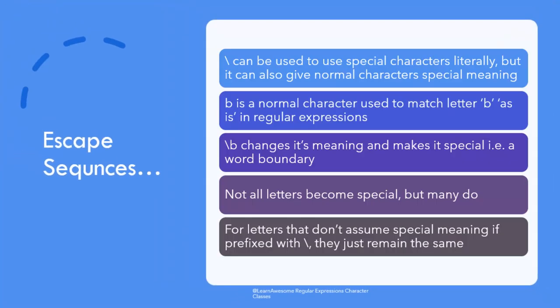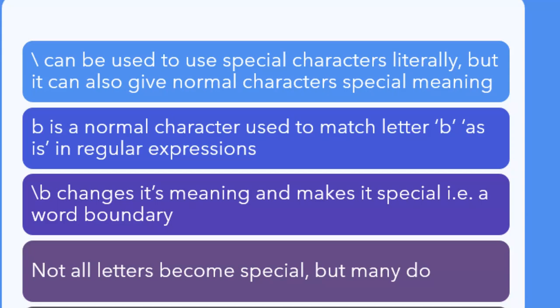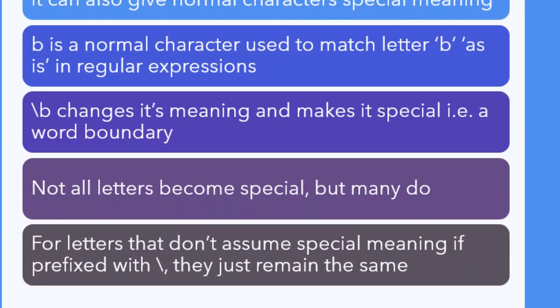There is a twist in the backslash story: backslash can not only strip a special character of its power, it can also give special powers to certain ordinary characters. For example, prefixed with letter b, it transforms it into a word boundary, matching letters a to z, capital A to Z, zero to nine, and underscore. Importantly, even though escape sequences are double in size to an ordinary letter, they are still atoms or elements participating in regular expression like individual alphabets. You can apply quantifiers like question mark or plus to backslash b, just like you can on b itself.